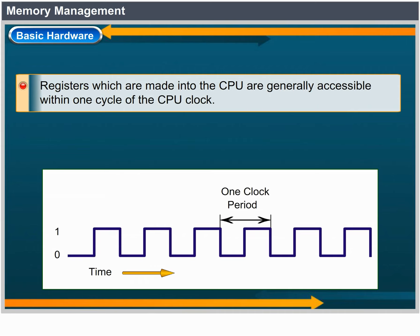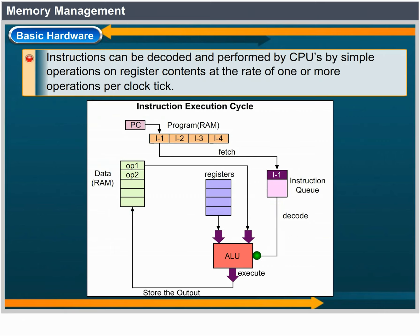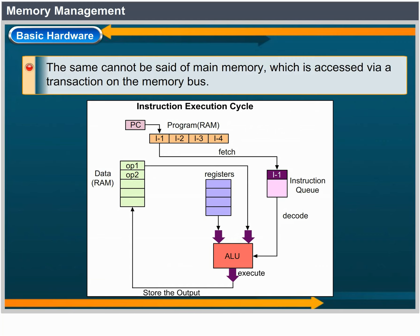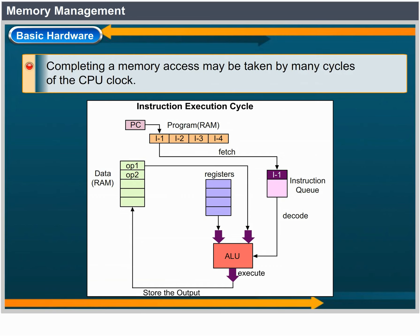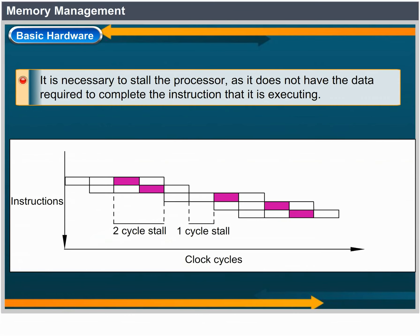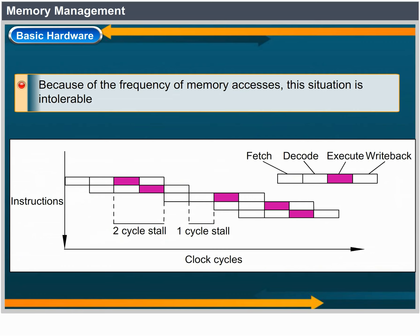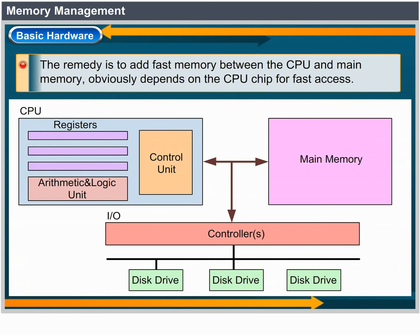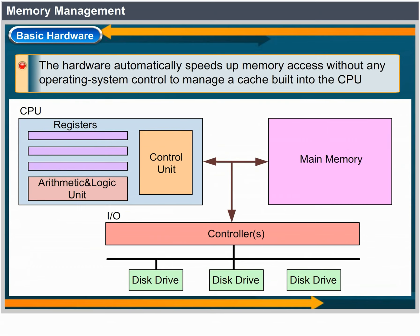Registers built into the CPU are generally accessible within one cycle of the CPU clock. Most CPUs can decode instructions and perform simple operations on register contents at the rate of one or more operations per clock tick. The same cannot be said of main memory, which is accessed via a transaction on the memory bus. Completing a memory access may take many cycles of the CPU clock. In such cases, the processor normally needs to stall. The remedy is to add fast memory — a cache — between the CPU and main memory, typically on the CPU chip for fast access.